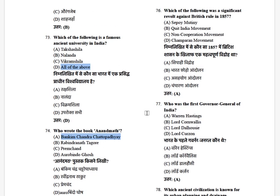Which of the following was a significant revolt against British rule in 1857? The options are: Sepoy Mutiny, Quit India Movement, Non-Cooperation Movement, and Champaran Movement. The answer is C — the Sepoy Mutiny.